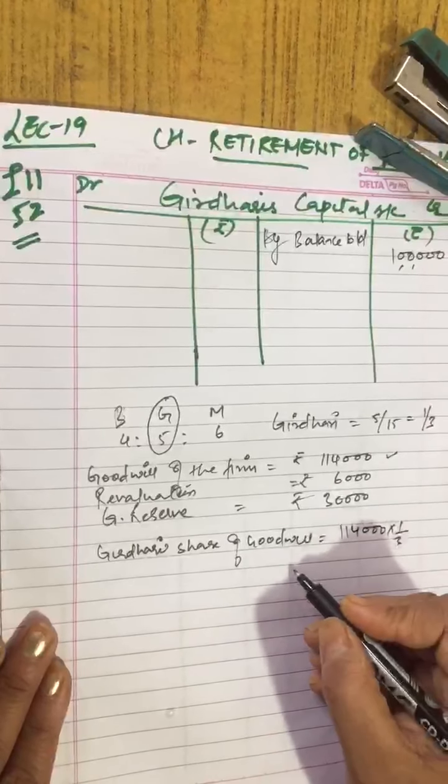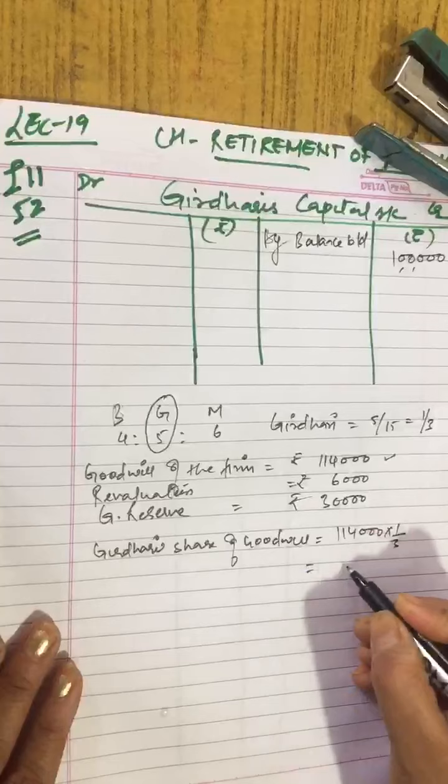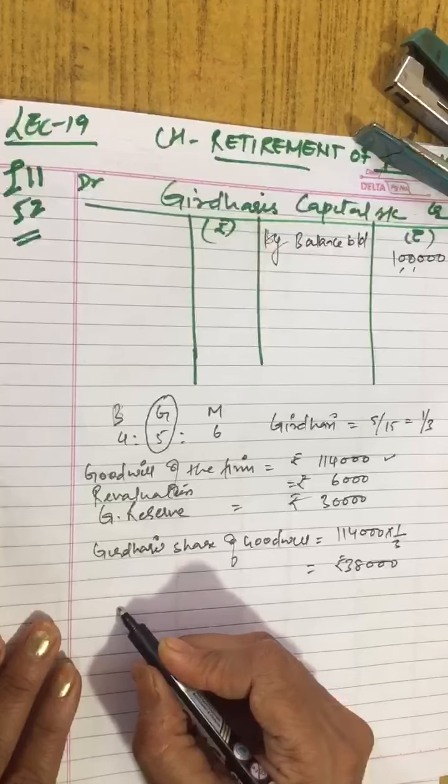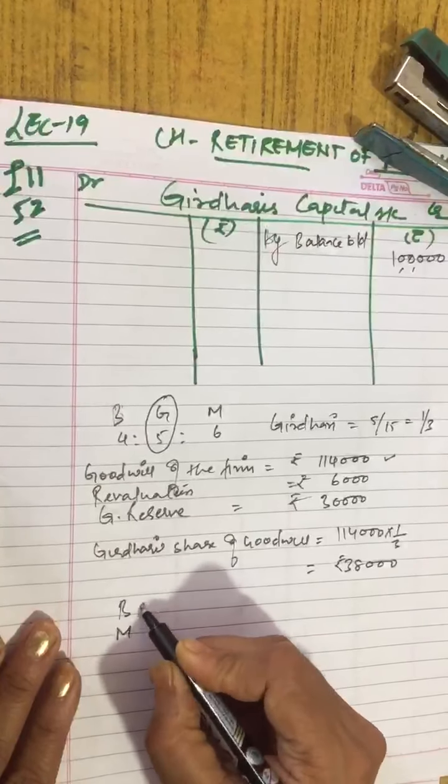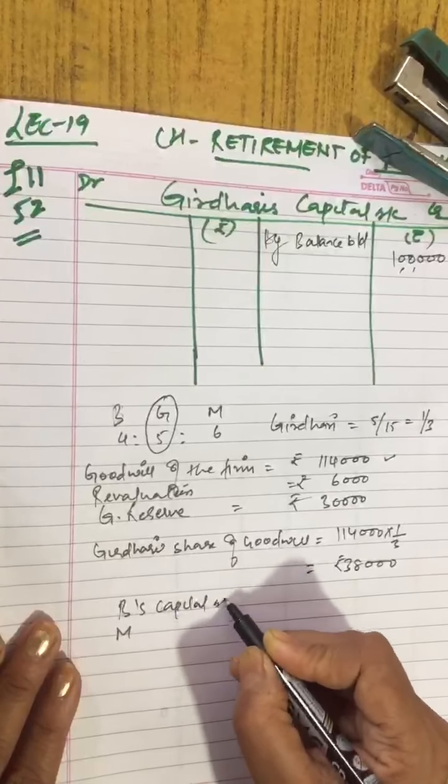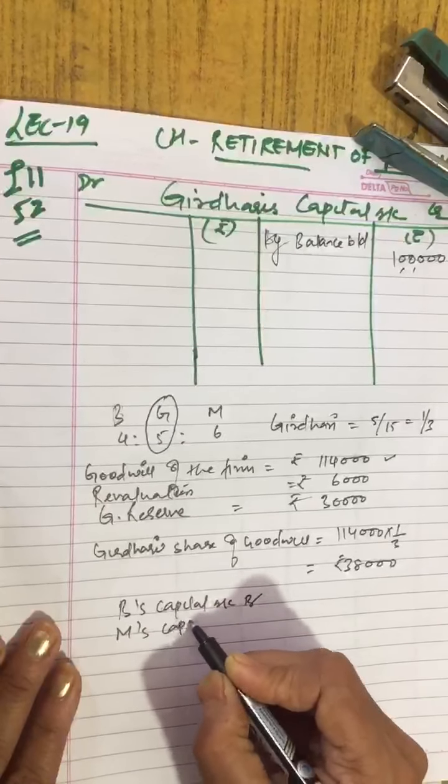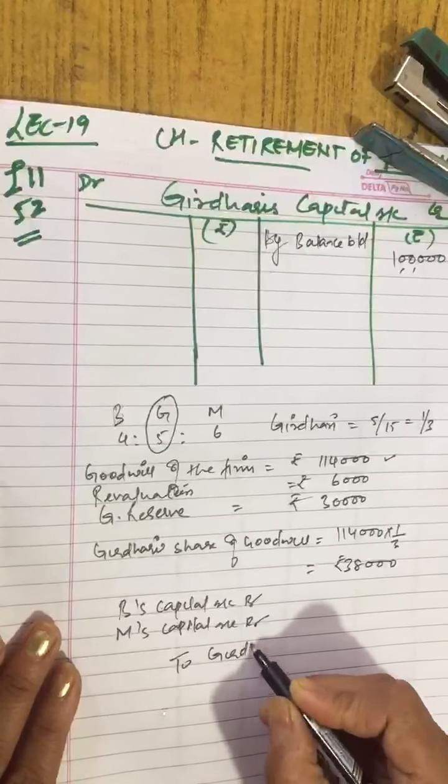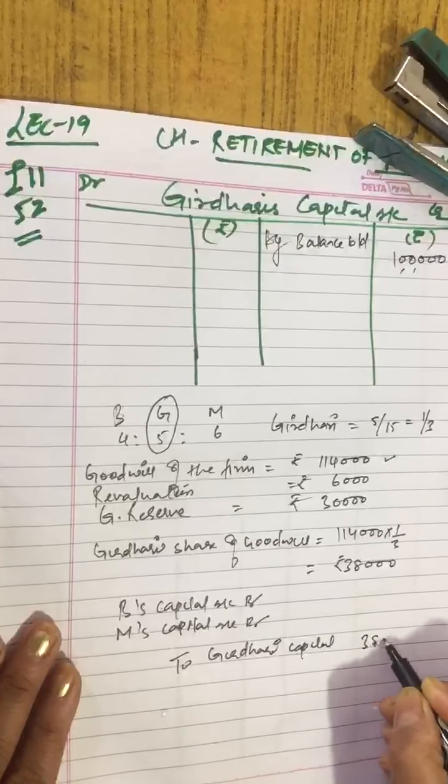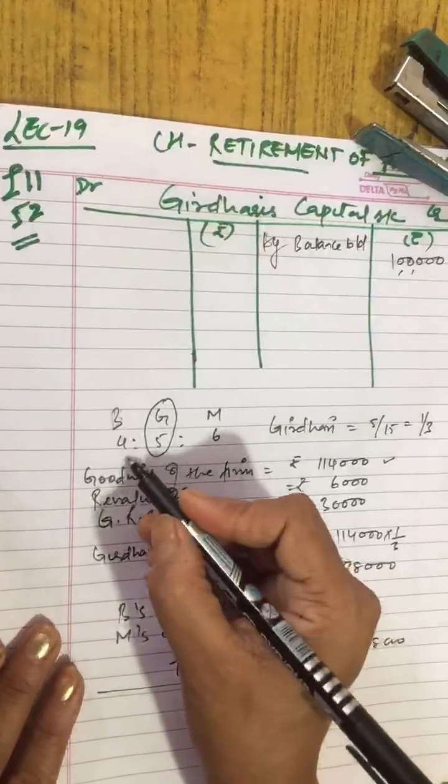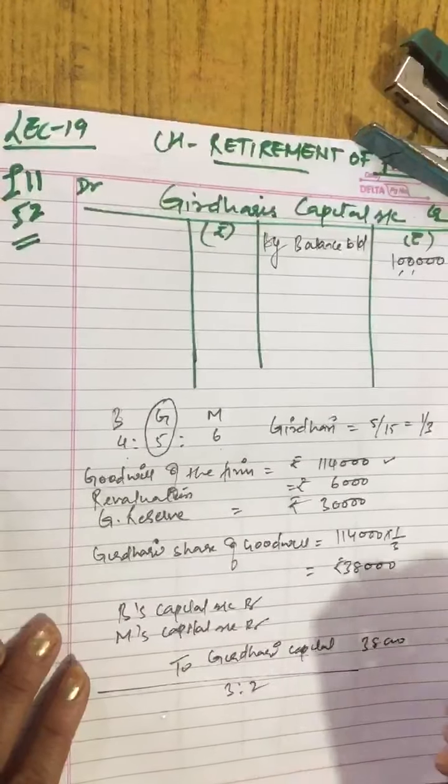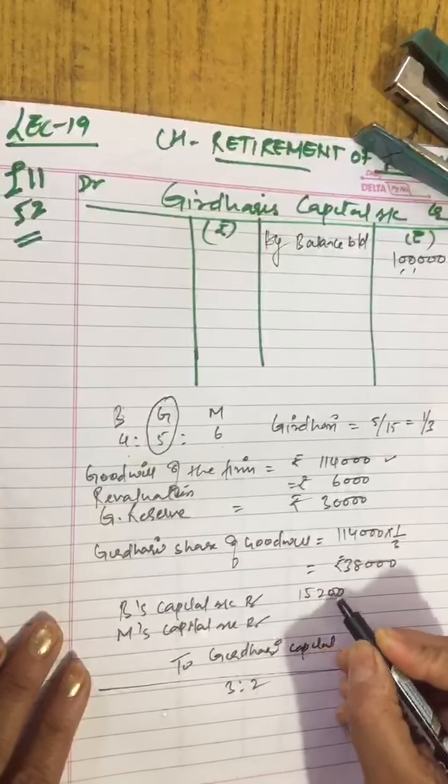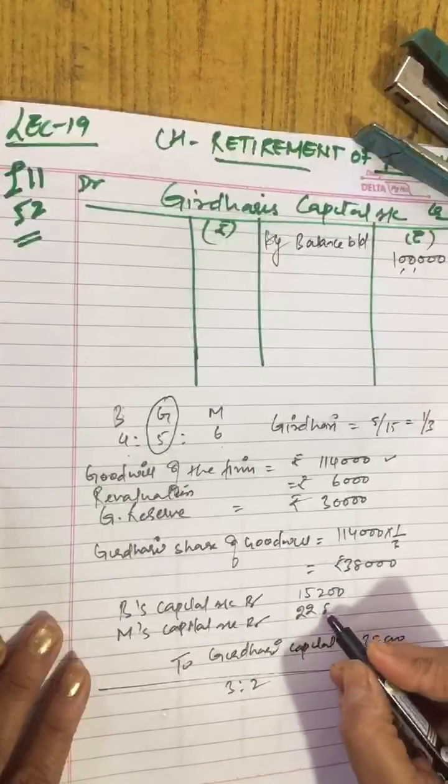Girdhari's share of goodwill we will calculate. 1,14,000 into 1 by 3, if you calculate, the balance comes to 38,000. And this 38,000 who will give? Banwari and Murari. In gaining ratio. If we calculate gaining ratio, Banwari's capital is 4 and Murari's is 6. So in 4:6 ratio we will transfer.